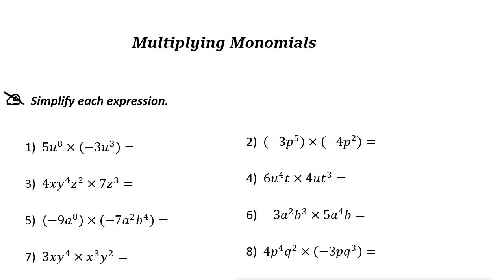Multiplying monomials. A monomial is a polynomial with just one term. For example, 2x is just one term. It's a monomial.